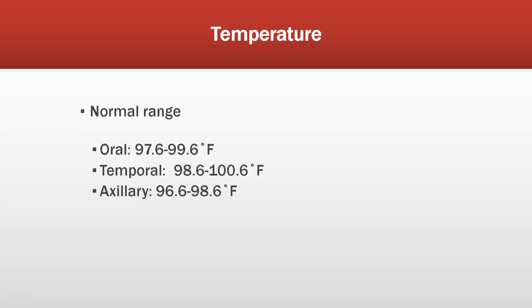A normal temperature can be 98.6 degrees Fahrenheit, but normal can be a degree cooler or a degree warmer. An oral temperature can range from 97.6 to 99.6. A temporal temperature runs a little warmer, with a normal range of 98.6 to 100.6. An axillary temperature runs one degree below oral, with a normal range of 96.6 to 98.6. Tympanic and rectal temperatures fall under the same range as oral.